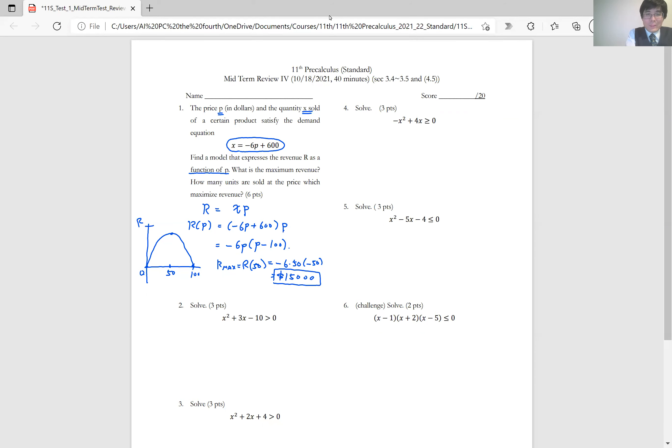How many units are sold at that price? How many units? That's basically what the x is when p is 50. So when p is 50, x is using this 300. So the answer is 600 units are sold at that price to maximize the revenue.